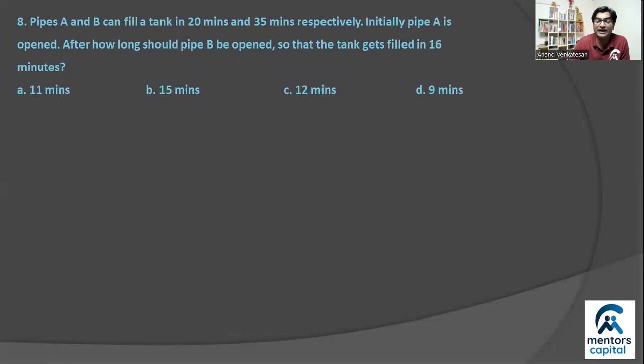Next question number 8. 20 minutes and 35 minutes to fill the tank. So first step work assumed. 20 is 4 into 5, 35 is 5 into 7. 5 is common, so when I assume the work I will assume it to be 5 included in both, 4 included for the first pipe and 7 included for the second pipe, that's 140 units. So let the work be 140 units. And since work is equal to rate into time, the rate will be work upon time. So here we have two pipes' rates. A's rate is 140 upon 20, that's 7 units every minute. And B's rate will be nothing but 140 divided by 35, that's 4 units every minute.